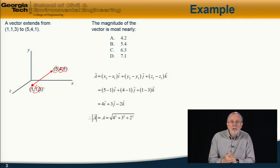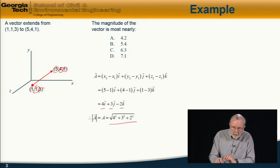And the magnitude of the vector is equal to the square root of the sum of the squares of the components. 4 squared plus 3 squared plus 2 squared is equal to 5.39. So the answer is b.